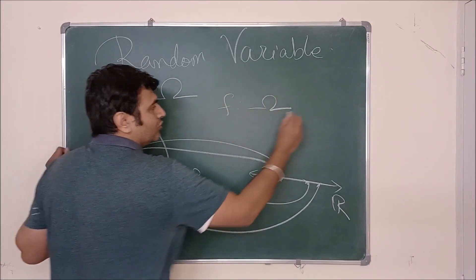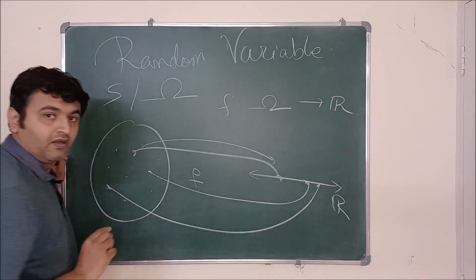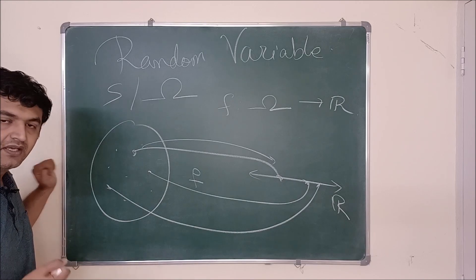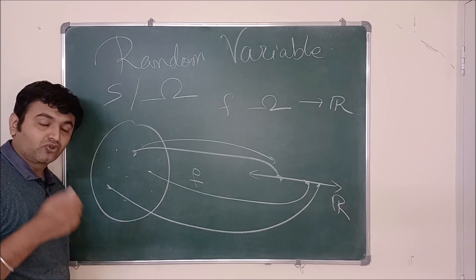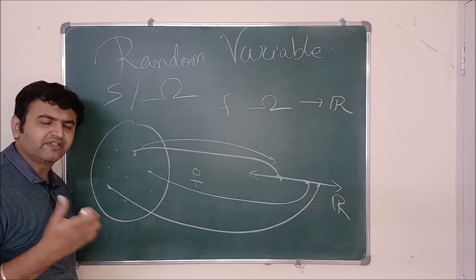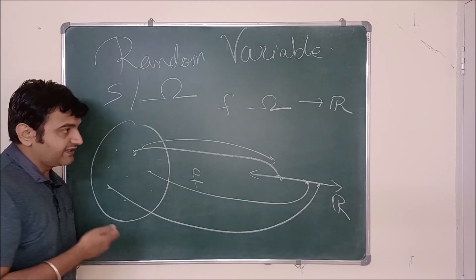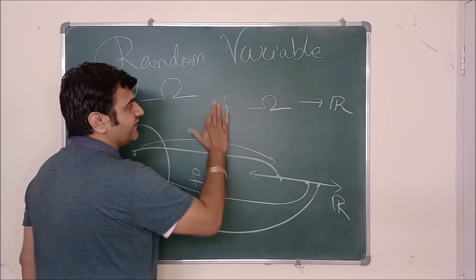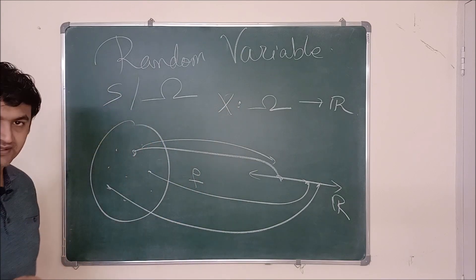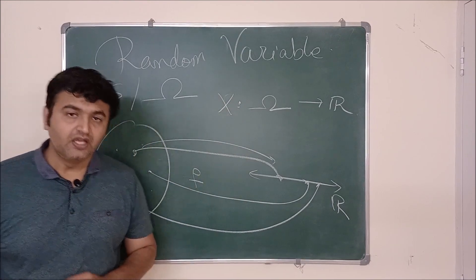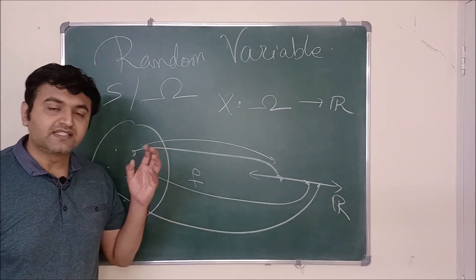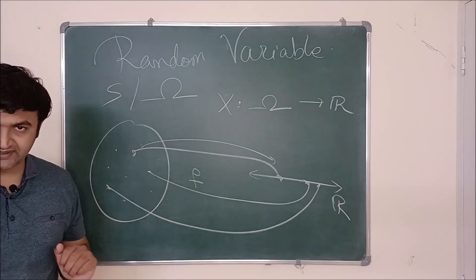It's a function from your sample space to the real numbers, but it's a nice function — that's why we call it a random variable. Just like in linear algebra you call a nice function a linear transformation, similarly we give good functions nice names. The notation we use is capital X, Y, or Z. So a random variable is a function from a sample space to real numbers that assigns a number to each possible outcome.